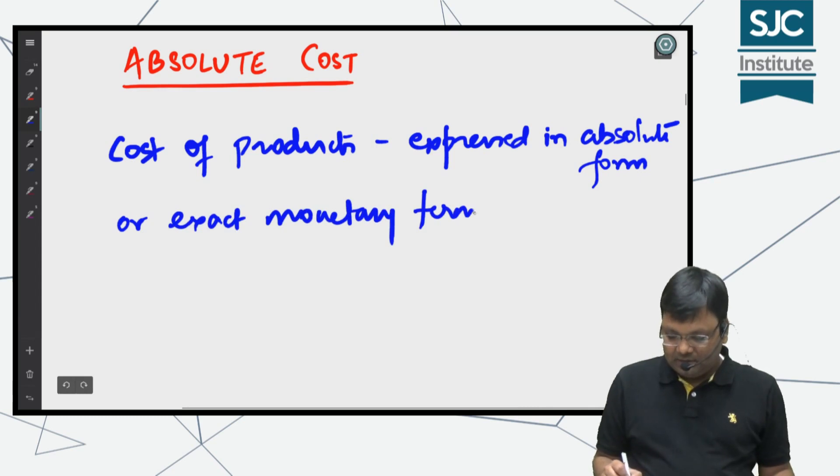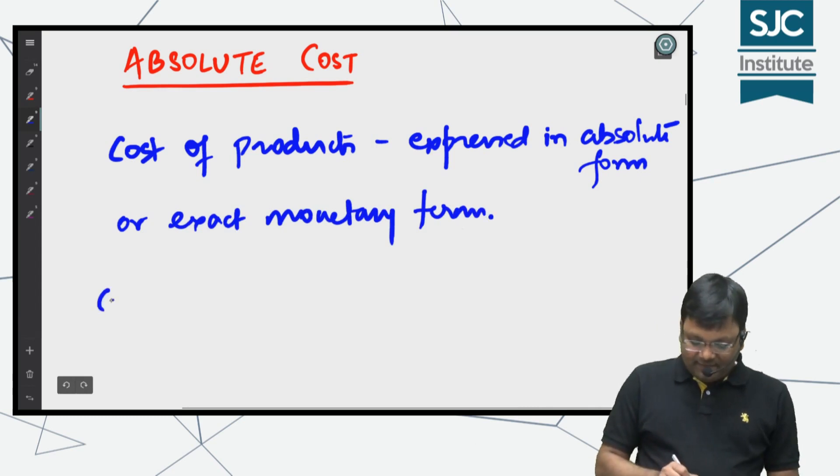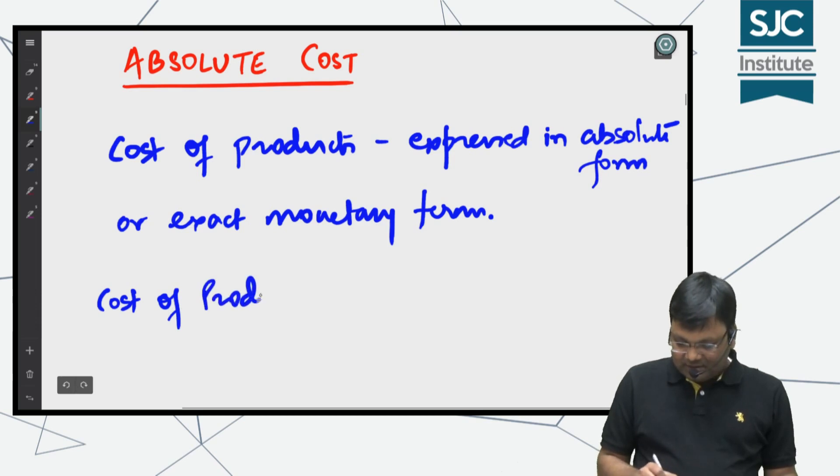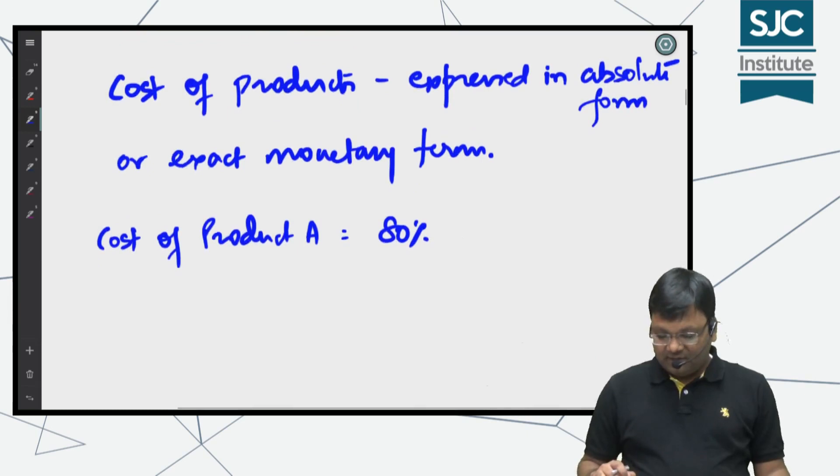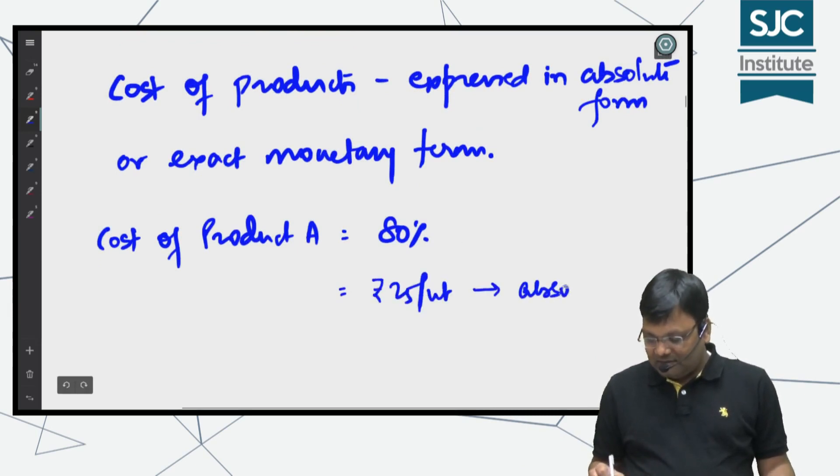I'll give you an example. Many times we say the cost of Product A is 80%. People at different organizational levels may not understand what 80% means. But if you say instead it is 25 rupees per unit, this is absolute form.